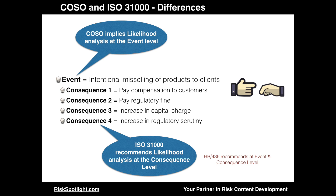The last and most significant difference relates to the analysis of likelihood. In COSO, it is implied that likelihood analysis is done at the event level. While ISO 31000 recommends likelihood analysis be conducted at the consequence level. HB 436, which is the guidance document on ISO 31000 from Australia, recommends that likelihood analysis should be done at both event and consequence level. For example, consider a risk titled 'intentional mis-selling of products to clients,' which may result in consequences such as paying compensation to customers, paying a regulatory fine, increase in capital charge, and increase in level of regulatory scrutiny. In COSO, likelihood analysis will be done at the event level and not at the level of each consequence, while in ISO 31000 it will be done at the individual consequence level.